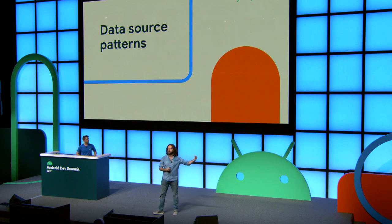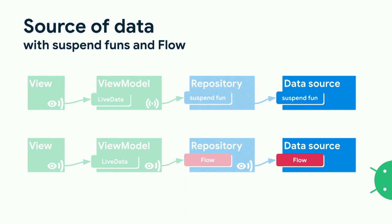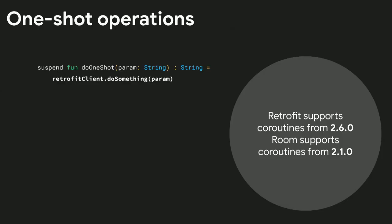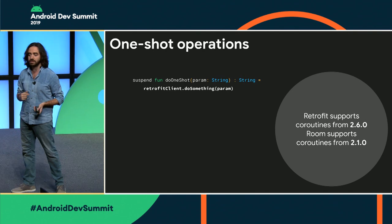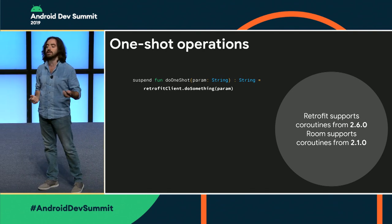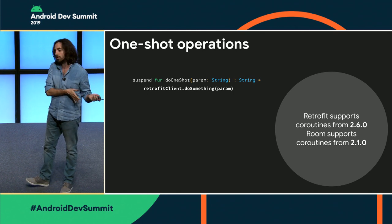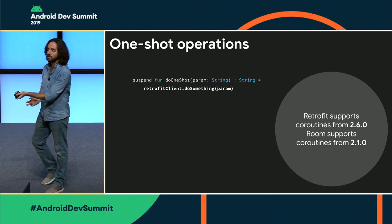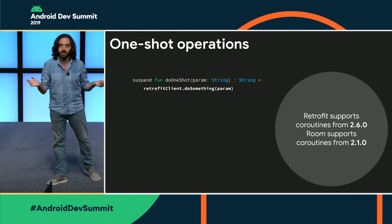Let's look at all those cases. The first and best case: you have a one-shot operation to get some value, like from a network request. If you're using Retrofit, just mark the function as suspend, and you're done — Retrofit already supports suspend functions since version 2.6. Similarly, if you're using Room for your database, since version 2.1 it supports suspend functions. You tell it to return a suspend function and you're done.